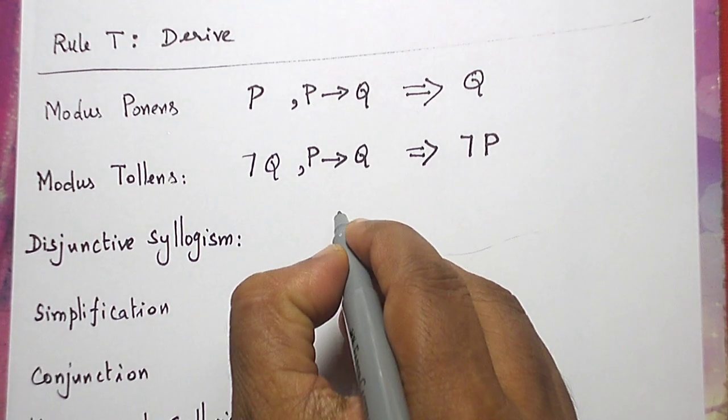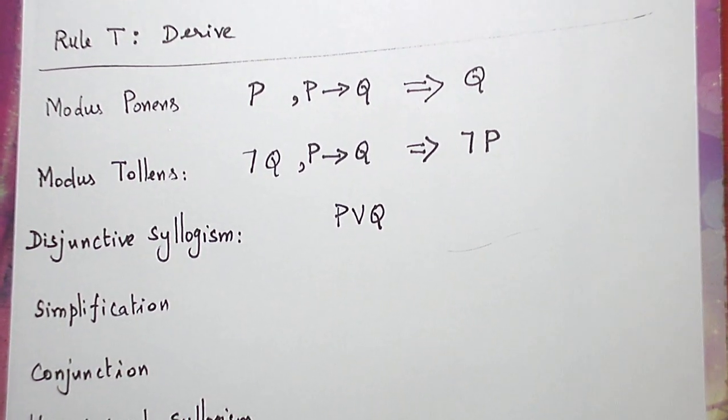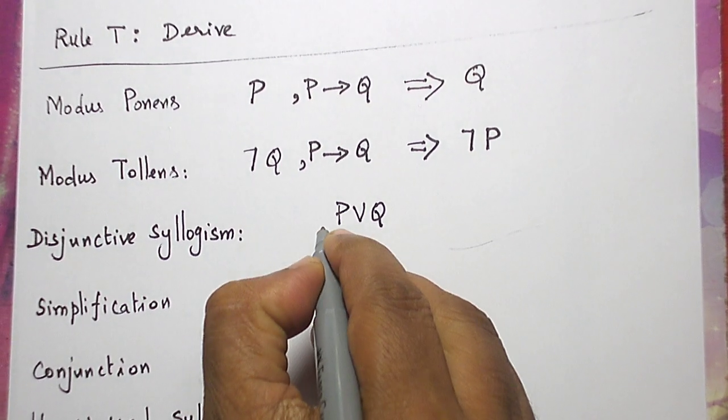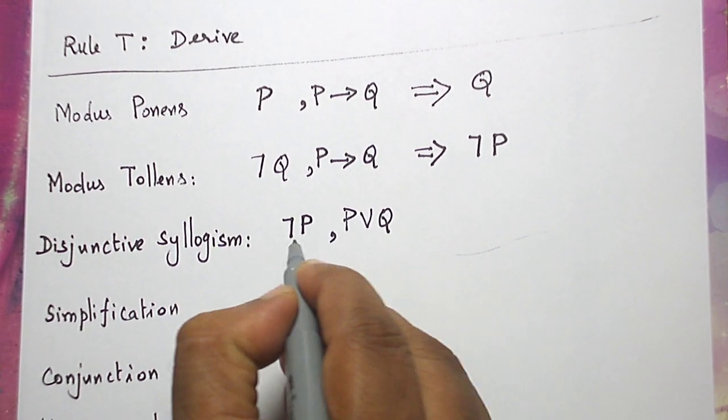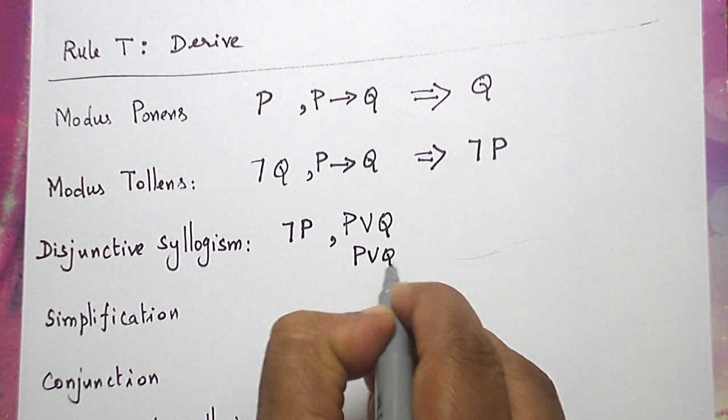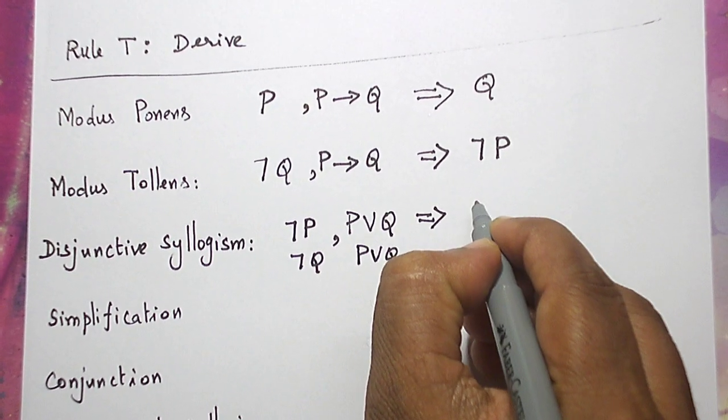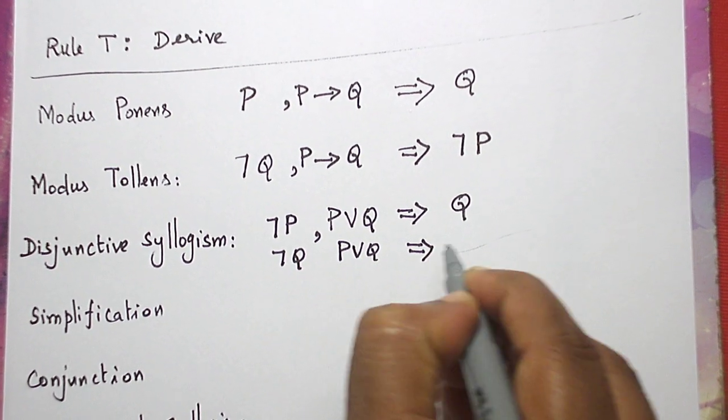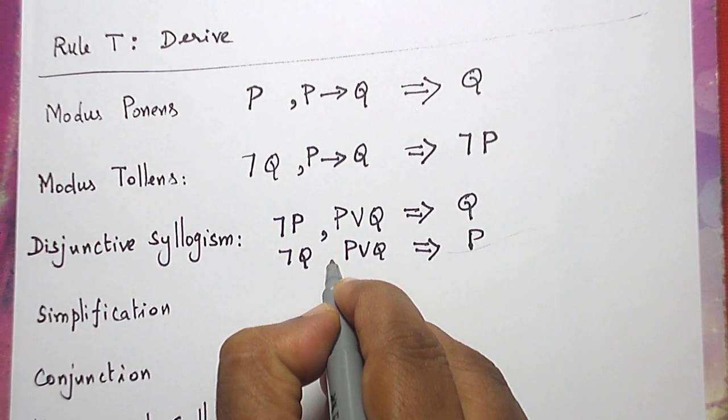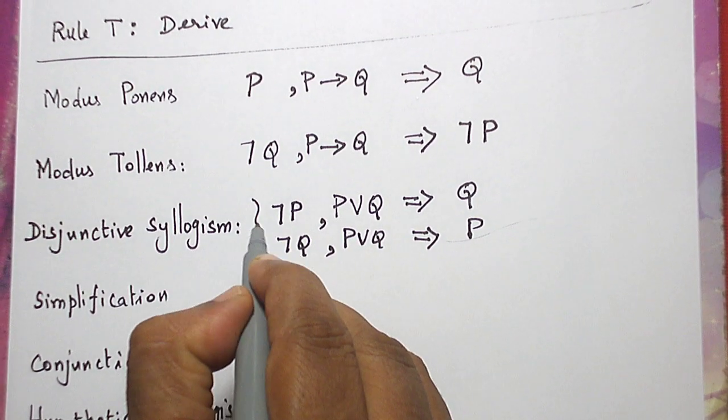If you are having a disjunctive statement, disjunctive connective, P or Q, along with this, either we have negation of one statement or negation of another statement. Then, we will have the other statement, Q as a derivation or other statement, P as the derivation. So this is disjunctive syllogism.